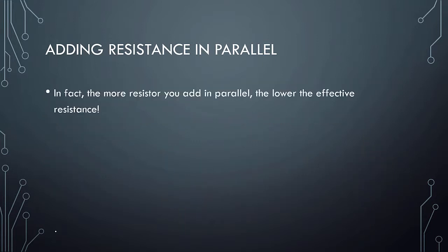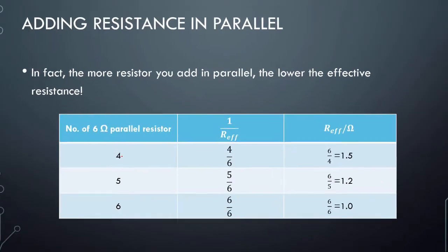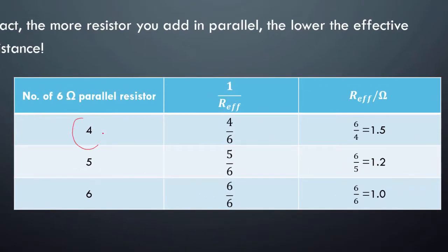In fact, the more resistors that you add in parallel, the lower the effective resistance. If you have four 6 ohm parallel resistors, you find that it is 4 over 6, then flip it over 6 over 4, you get 1.5 ohms.